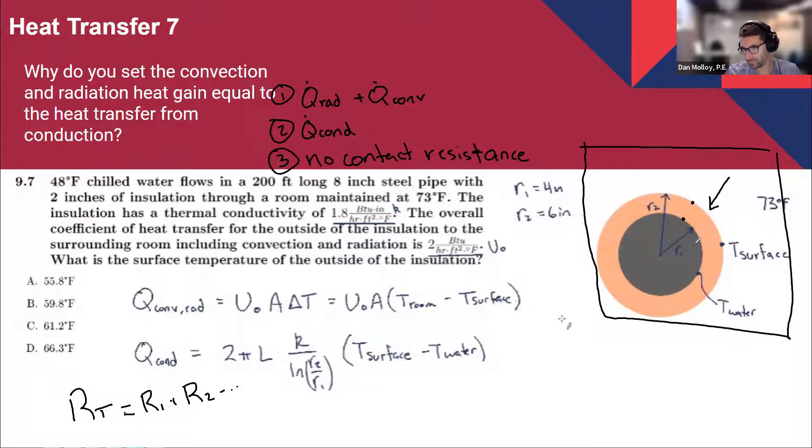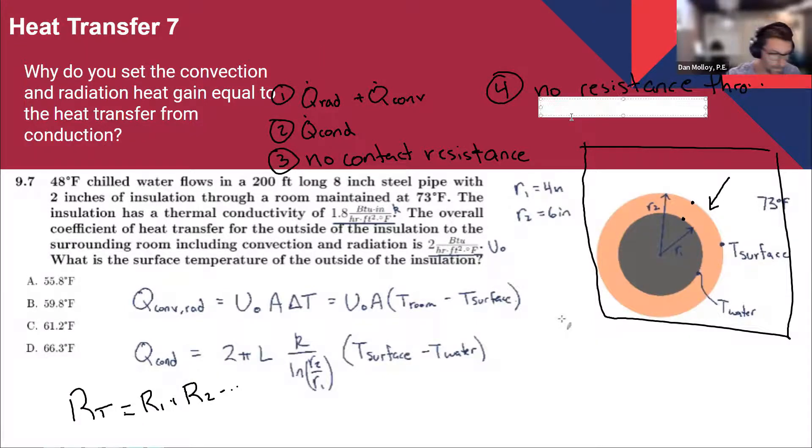Okay, so the next thing after there's no contact resistance is getting through the thickness of the pipe itself, which would be another conduction, but now I'm making the assumption that it's a steel pipe. It's a great conductor. That resistance is negligible and the pipe is not particularly thick. So the level of obstruction or resistance that there is to heat transfer flowing through the thickness of the pipe is negligible. So no resistance through pipe.